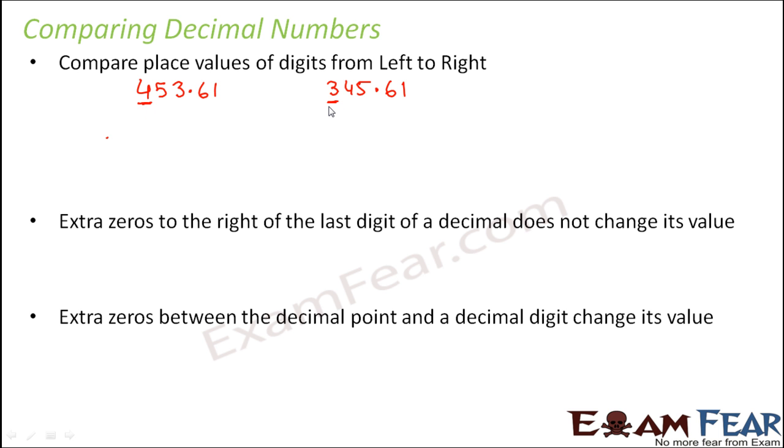4 is bigger than 3, but that doesn't necessarily mean that this number is bigger than this number. Why? In this case it is bigger because this 4 is at the hundreds place. This is 1's place, this is 10's place, this is hundreds place, and here also 3 is at the hundreds place. So both these digits are in the hundreds place and 4 is greater than 3. Therefore, this number will be greater than this number.